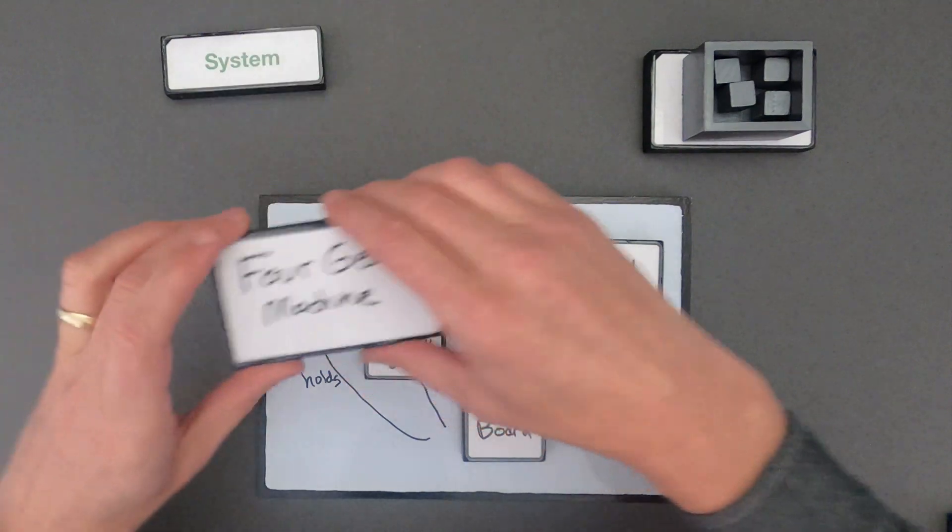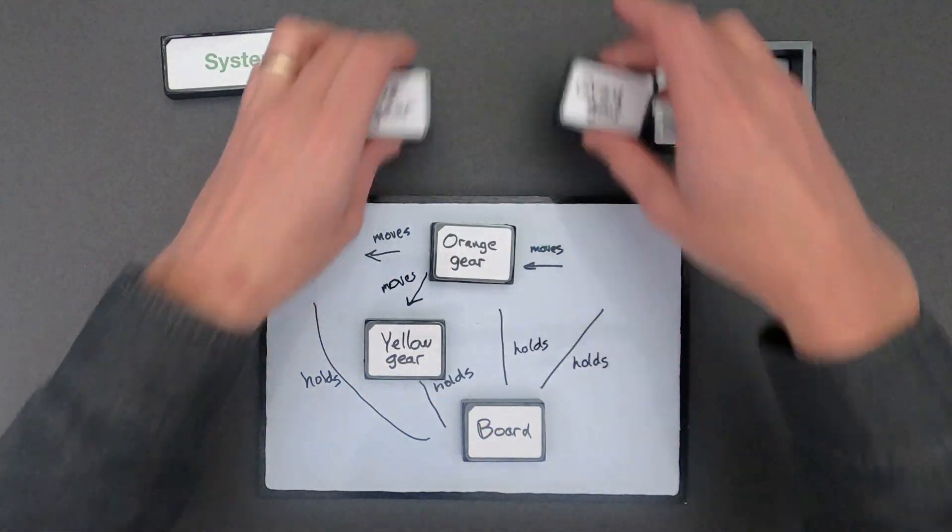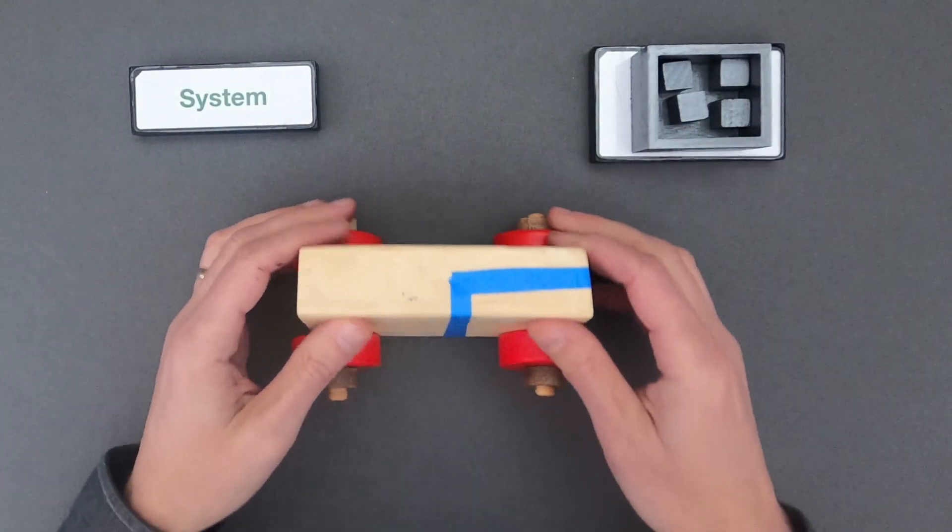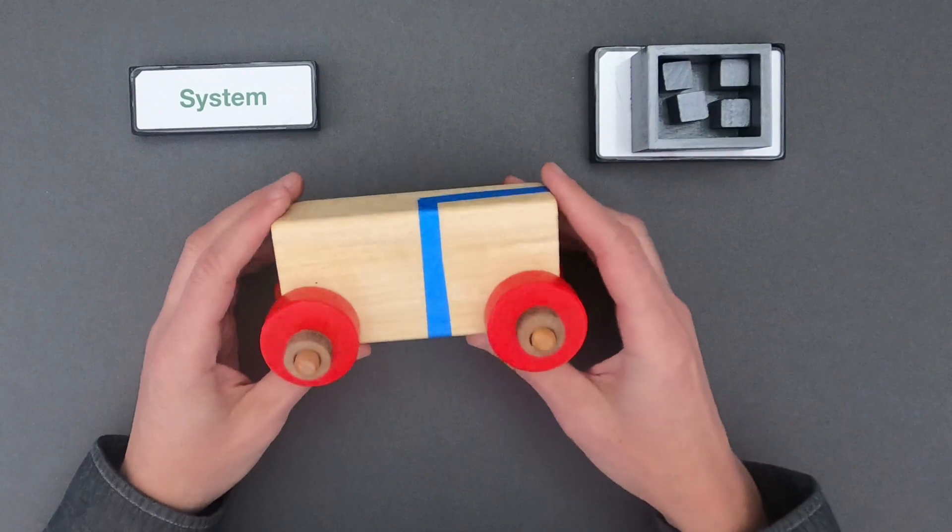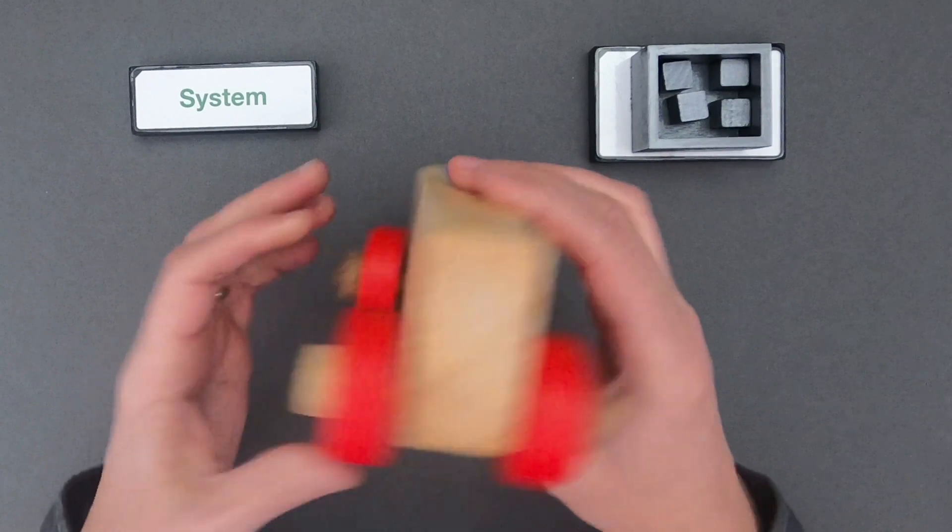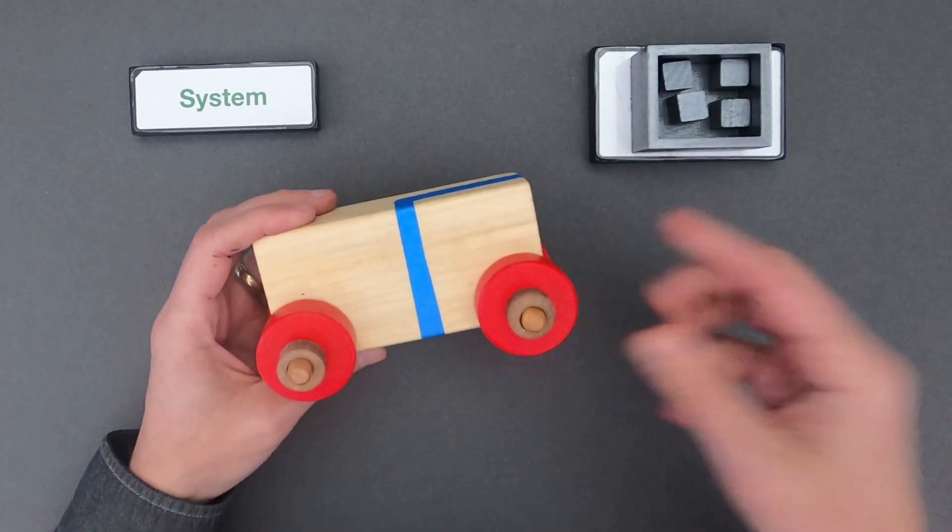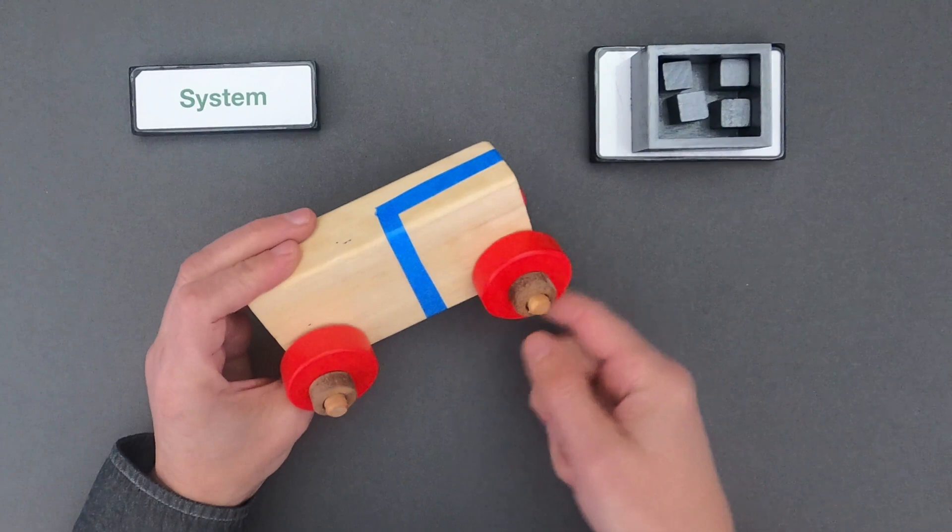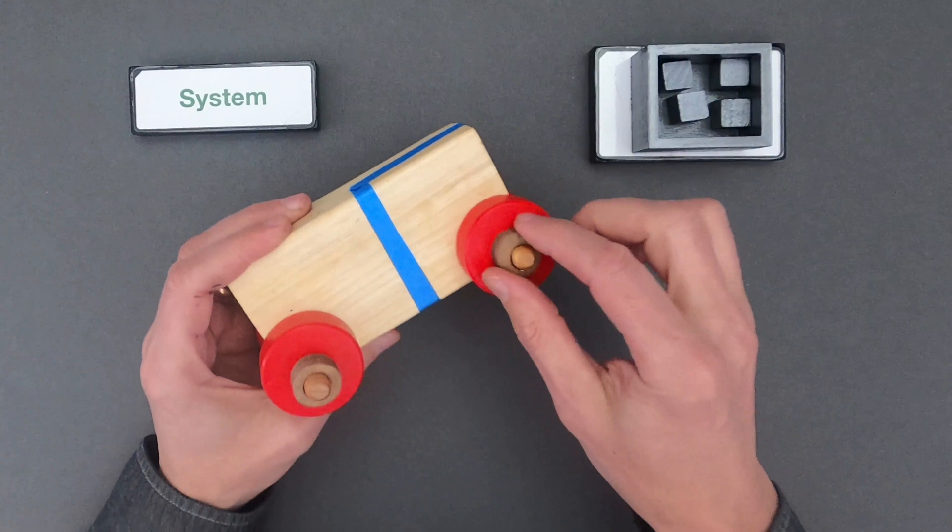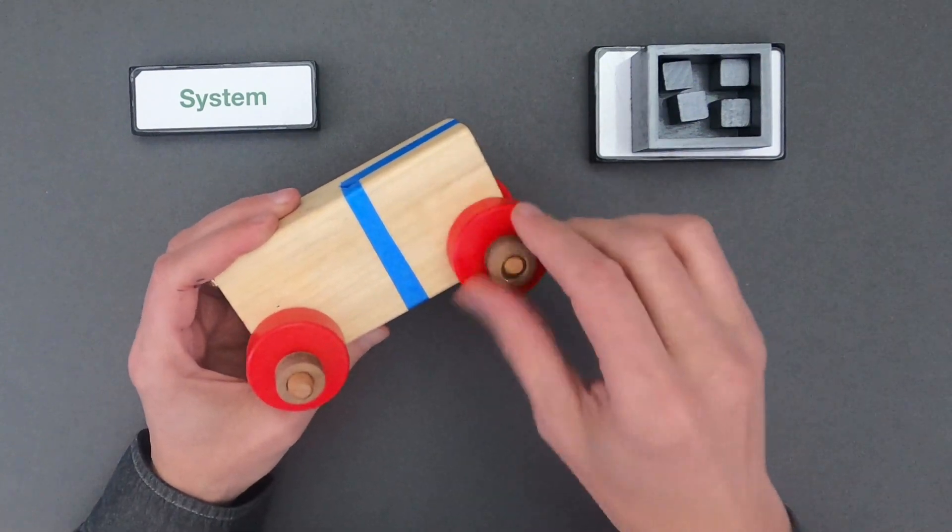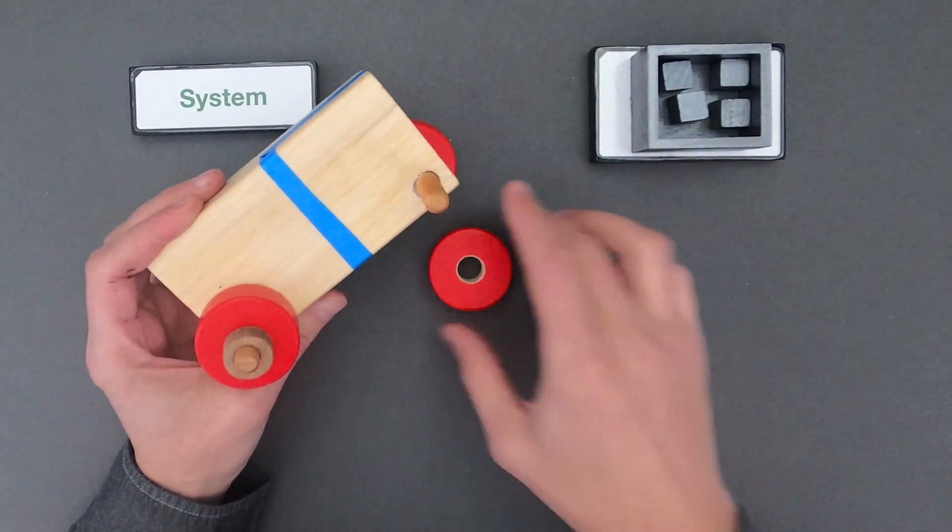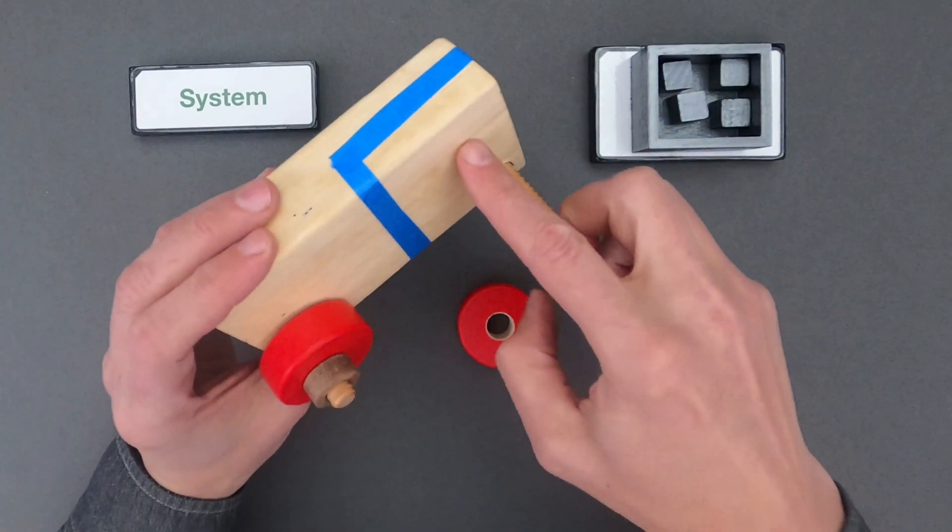And what I'd like to have you do is do the same kind of thinking around another system. So the next system we're going to look at is this wooden car. Now we could look at the whole wooden car and how it works as a system. But there's a lot of parts, and a lot of the parts just are repeated over and over. So let's look at a specific part of the system. So that's going to be the part of the system that is surrounded by this blue tape. So that's going to be the part where we connect the wheel. So there's going to be a nut, there's going to be a wheel, there's going to be a bolt, and then there's going to be a block.